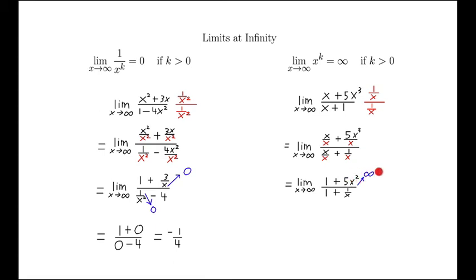The x squared tends off to infinity. That's what this rule says. So we can use this rule now to say that x squared is going to tend off to infinity. The 1 over x will tend off to 0 by this rule.